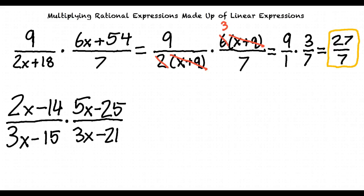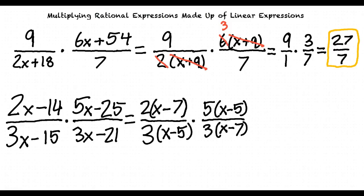To start this problem the first step we must take is to factor everything we can. 2 times x minus 7 over 3 times x minus 5 multiplied by 5 times x minus 5 over 3 times x minus 7.